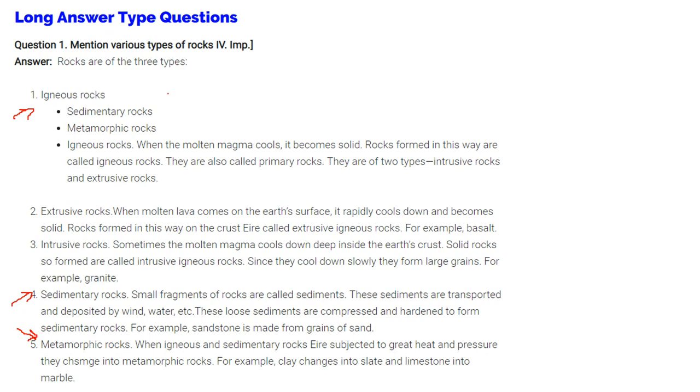What is igneous rock? When the molten magma cools, it becomes solid. The rocks formed in this way, these are called igneous rocks. They are also called primary rocks. They are of two types: intrusive rocks and extrusive rocks.